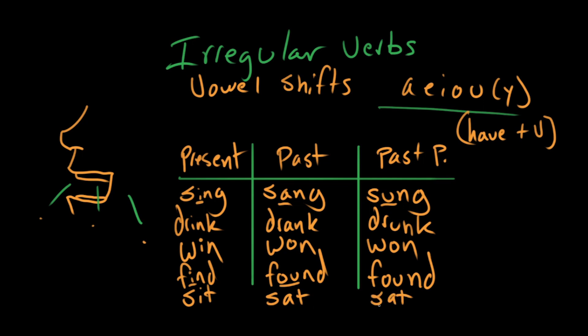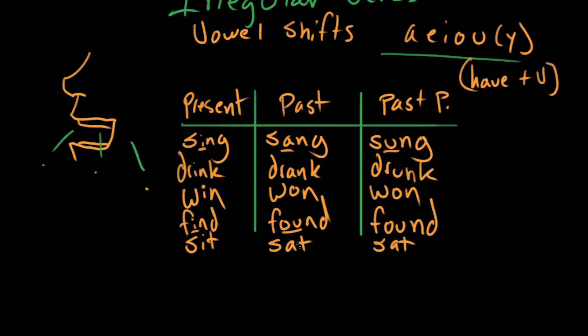Sit becomes sat. Sneak becomes snuck. And run becomes ran. And run is a weird one because the past perfect form of run is run. He had run. Not he had ran.